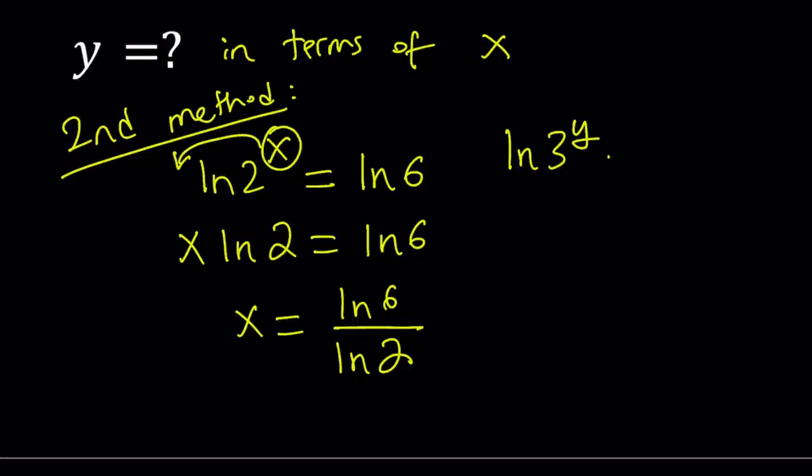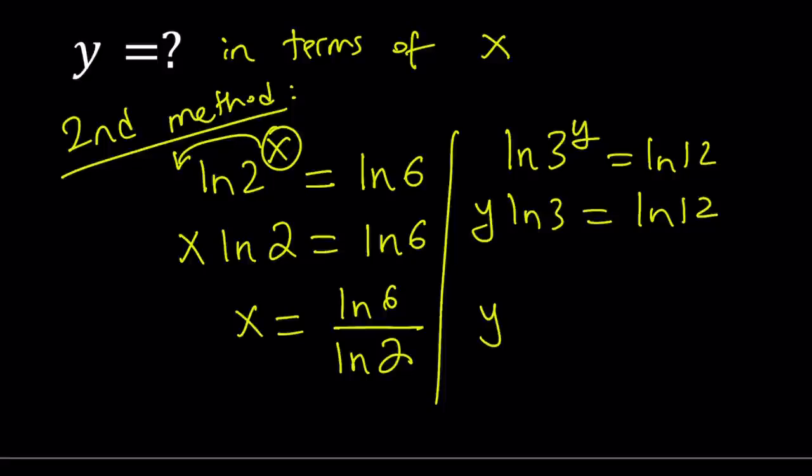Let's go ahead and take a look at the other equation, see what we can do there. Let's also ln both sides here. So kind of like separate these. And this gives us y ln 3 equals ln 12. And from here, y becomes ln 12 over ln 3. So we could also express the problem like this. x equals this, y equals that. Can you find or express y in terms of x?